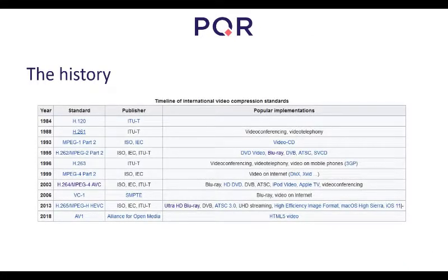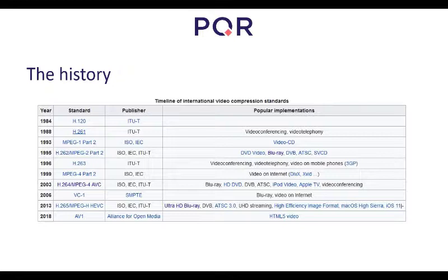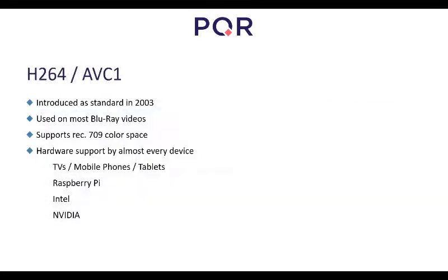There's quite some history in video codecs. The most common one now is H.264. Many of you probably remember DivX or XviD back in the day — that was MPEG-4 encoding. There are also newer ones like H.265 and AV1, which compress the image even further. H.264 was introduced in 2003 as a standard and is used on most Blu-ray videos. It uses the Rec. 709 color space, and hardware support is in virtually every device today.